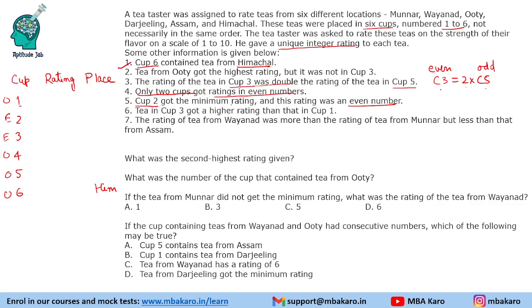Since the ratings are up to 10 only, we will try to assign a small number to cup 2. The smallest number cup 2 can get is 2. But if we put 4 instead, and cup 3 is double of cup 5, then cup 5 minimum will be 5. If we put cup 5 as 5, cup 3 will be 10 — but cup 3 is not the highest rating, so there would need to be a rating more than 10. Hence it is not possible to put 4.